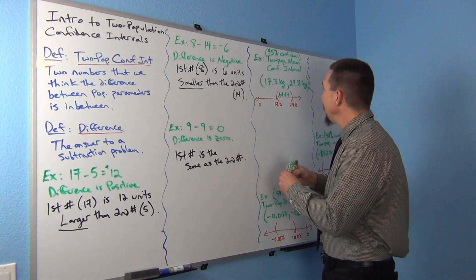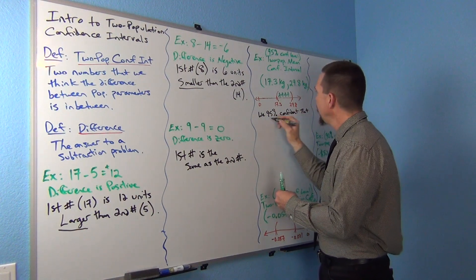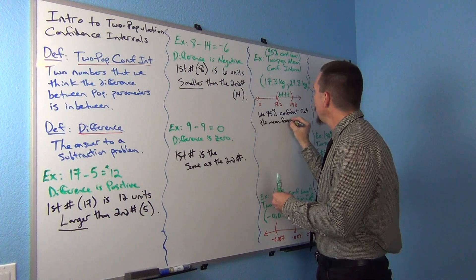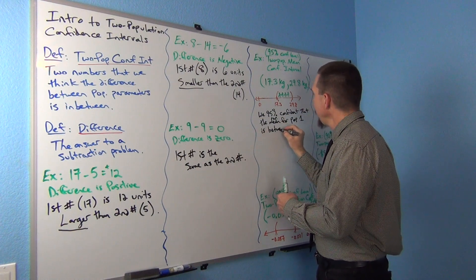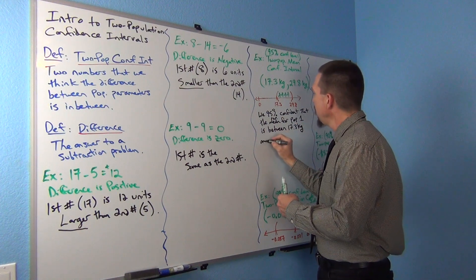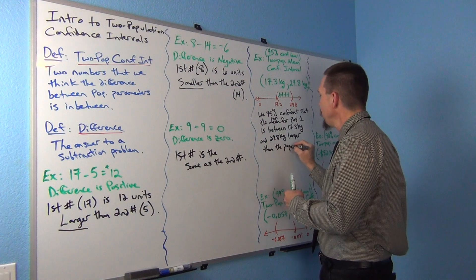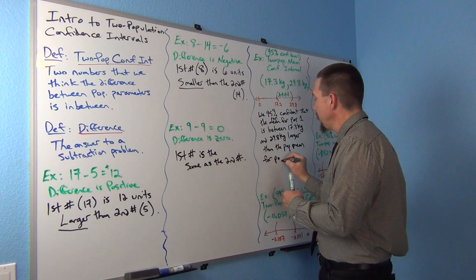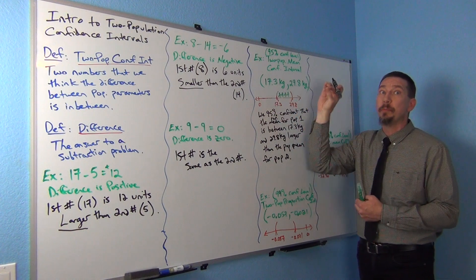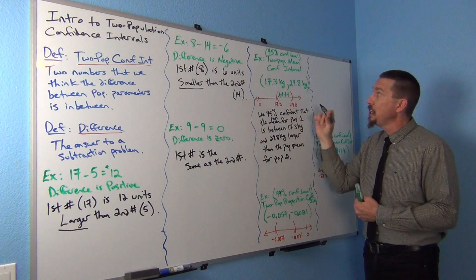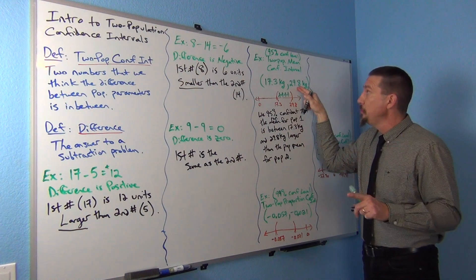So we are 95% confident that the population mean for population one is between 17.3 kilograms and 29.8 kilograms larger than the population mean for population two. Because both numbers are positive and all the millions of numbers are positive, I know the difference is positive, which tells me population one is actually higher than population two — between these two numbers higher. I don't know exactly how much because this came from sample data, but I know it's between these two numbers higher.